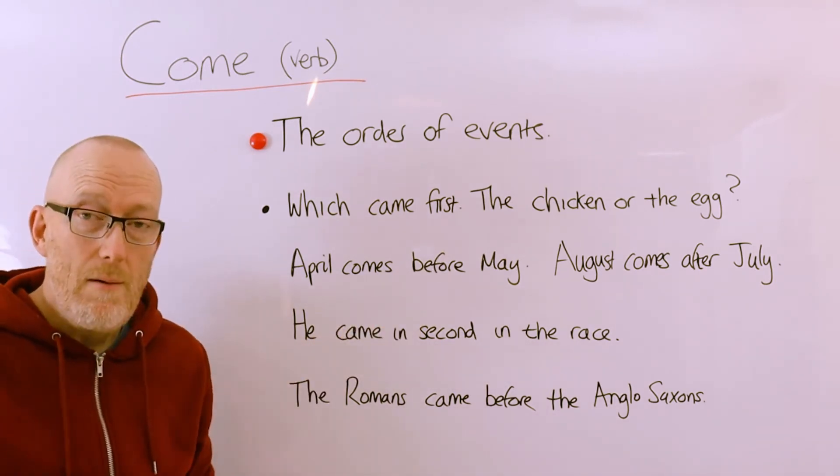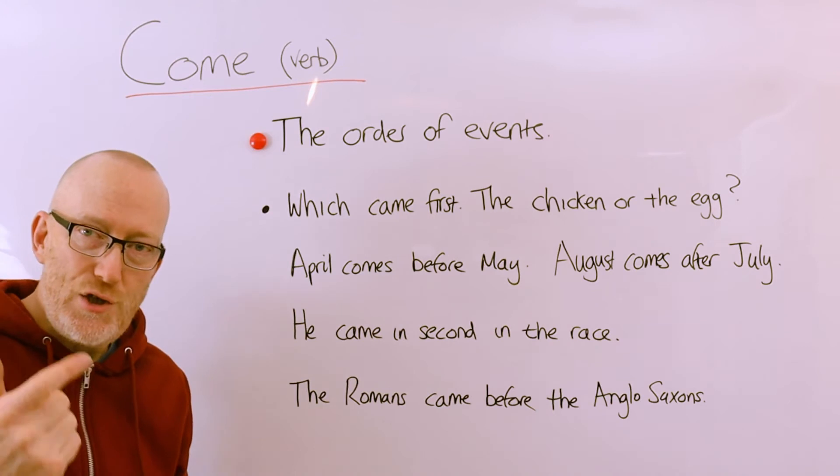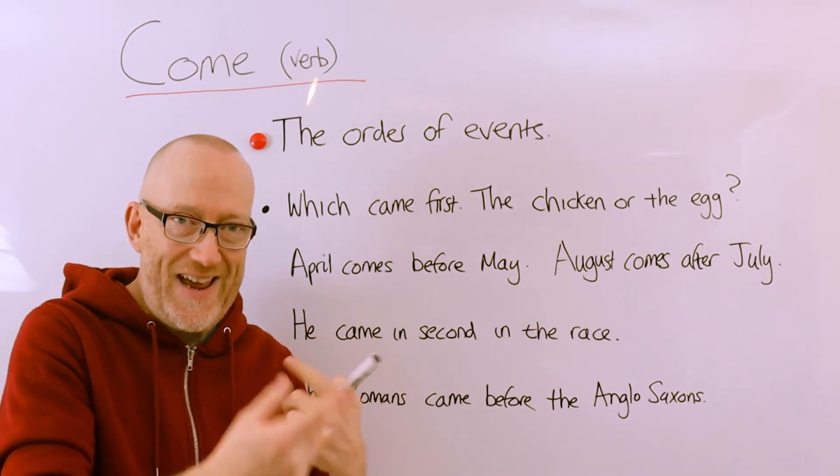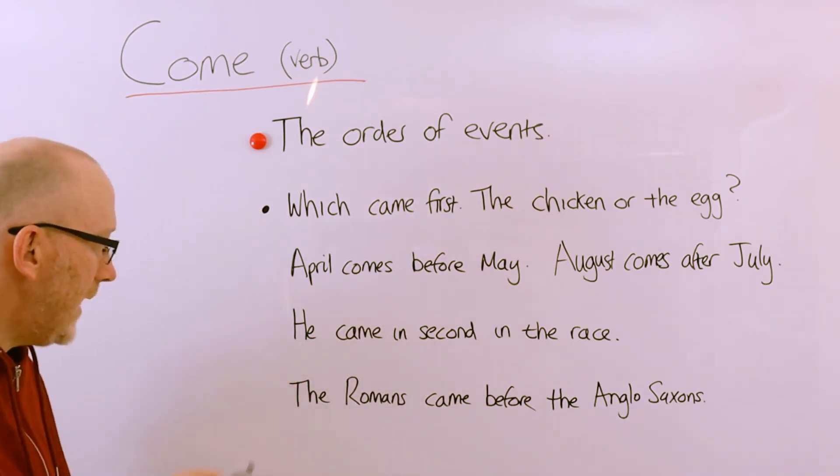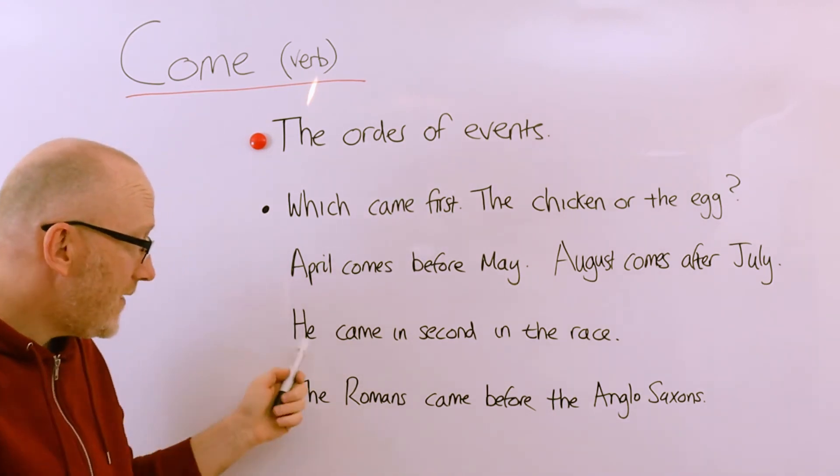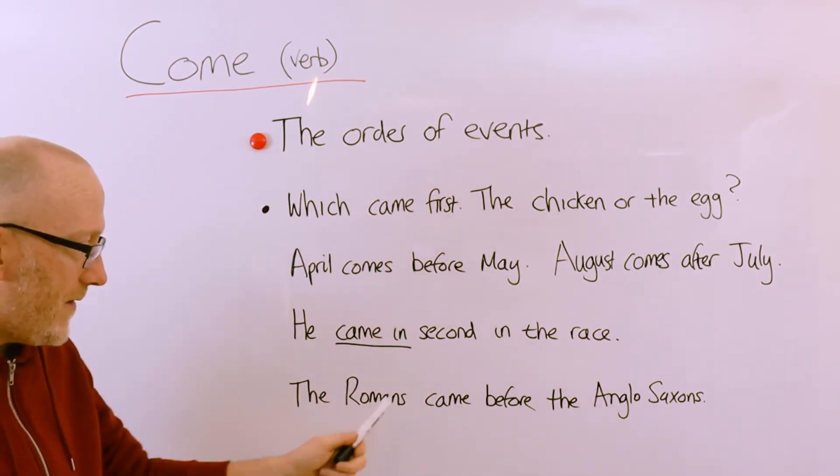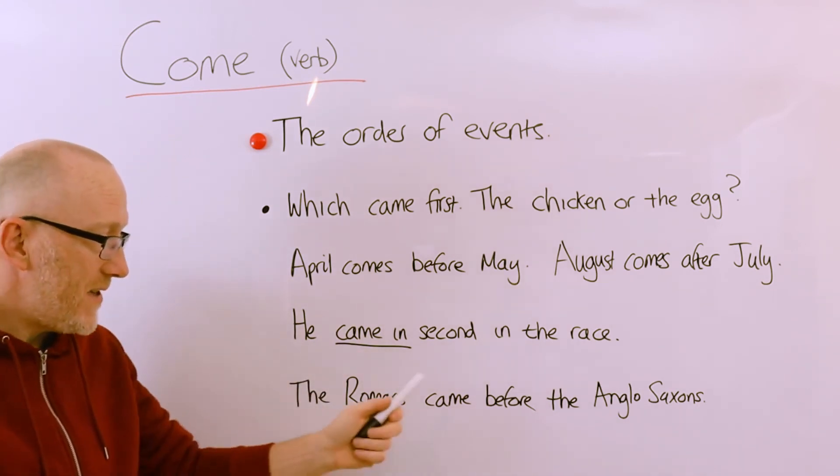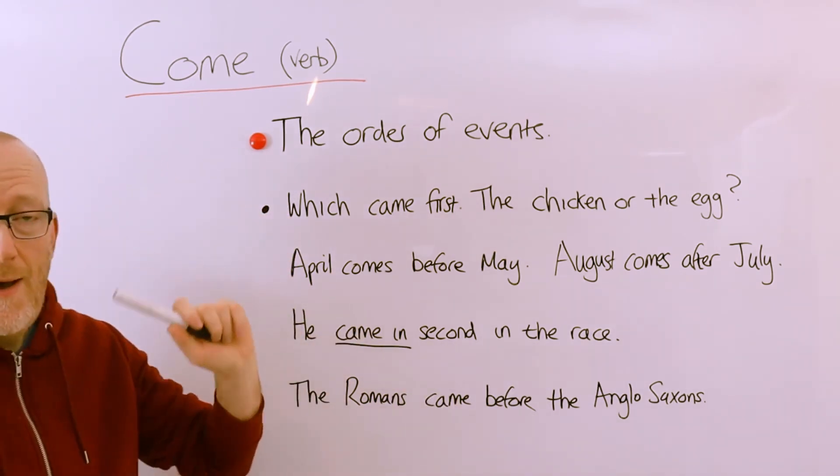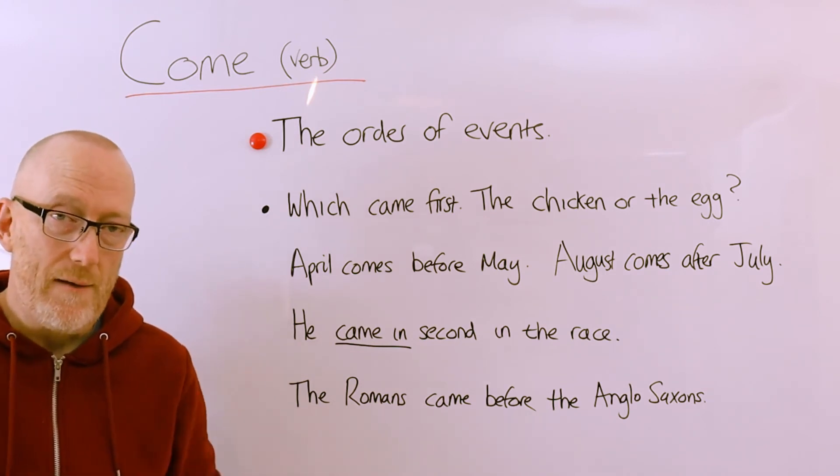August comes after July. May, June, July, August. So we could use come to order the sequence of the days of the week, the months of the year. He came in second in the race. He came in second, and he finished second, but we can say he came in second. So there you go, there's another phrasal verb for you. The Romans came before the Anglo-Saxons. The Romans came before the Anglo-Saxons. So again, that's ordering sequences of events, and it's very common for us to use the verb when we want to talk about the order or the sequence of things that we're talking about.